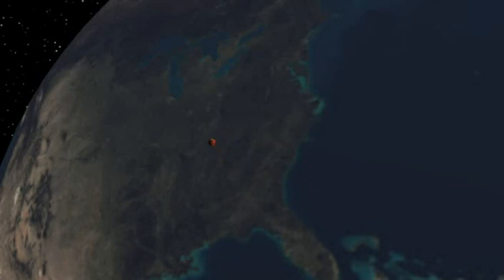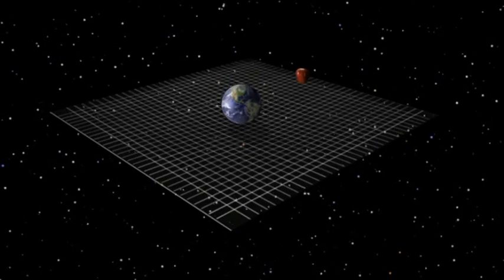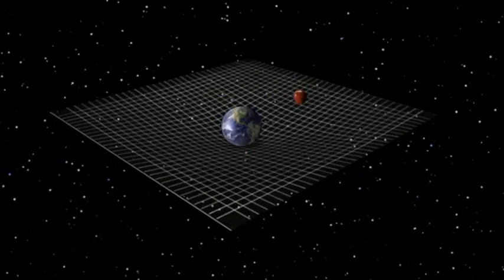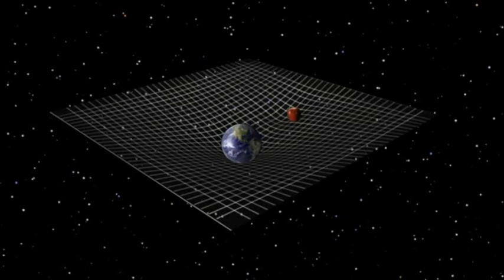So Einstein did away with the idea of an invisible force altogether. There is no mysterious force pulling the apple towards the Earth. Rather, the presence of Earth in space causes a curvature of the surrounding space-time.